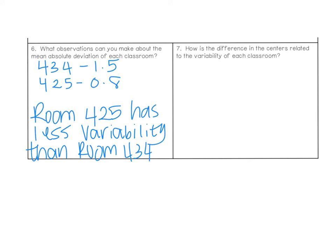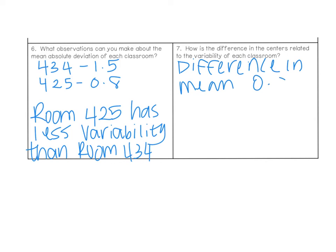Question seven: how is the difference in centers related to the variability of each classroom? The difference in mean — which we calculated earlier — was 0.9, and that is really close to the MAD value for room 425, which was 0.8.